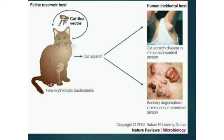Sometimes the cat flea also acts as a vector, and from there cat scratch disease occurs. Human beings are the incidental host. You can see cat scratch disease in immunocompromised patients — you can get this lump, which is actually a swollen lymph node, and you can also see bacillary angiomatosis in immunocompromised persons.